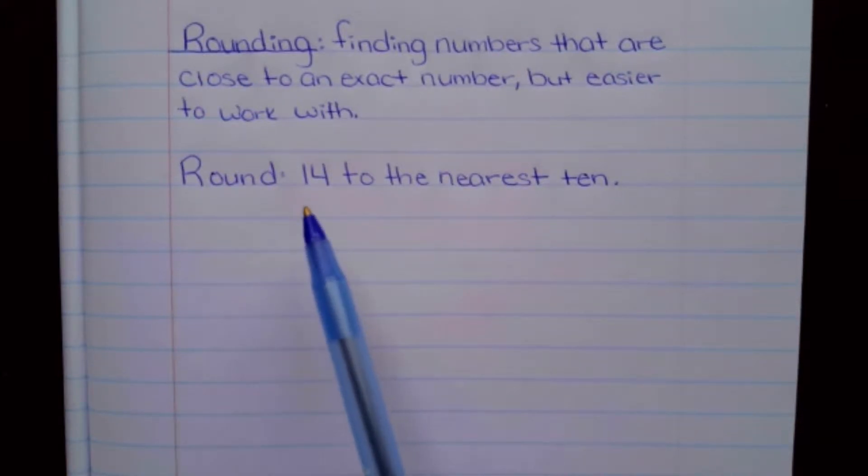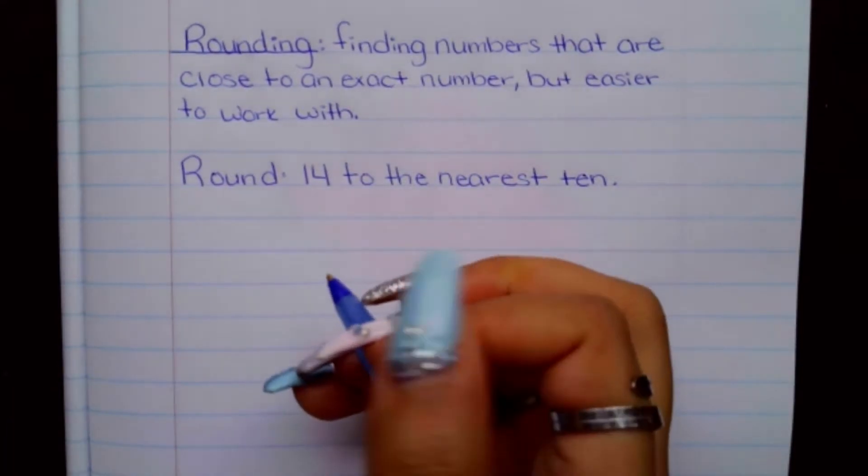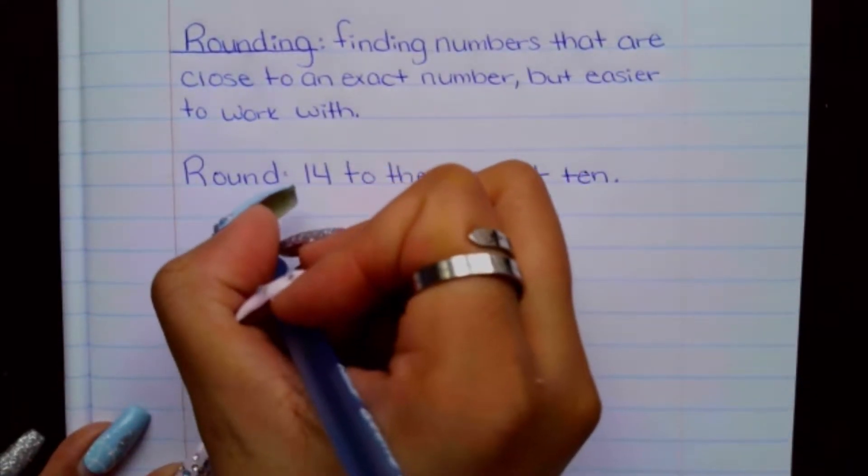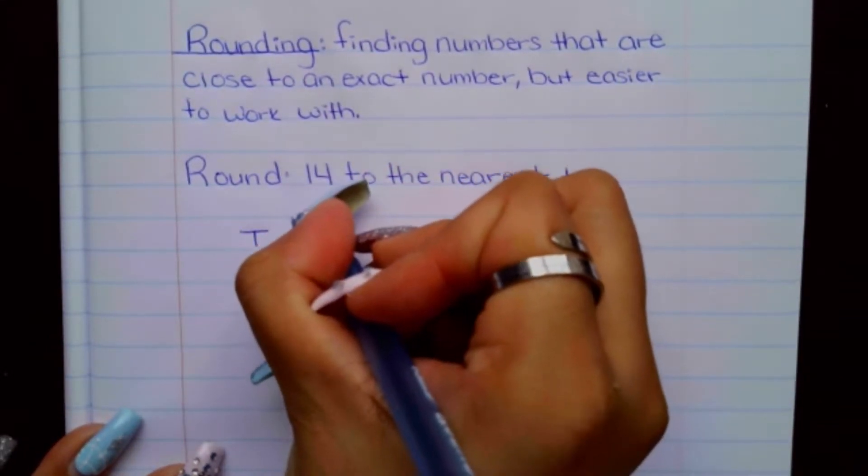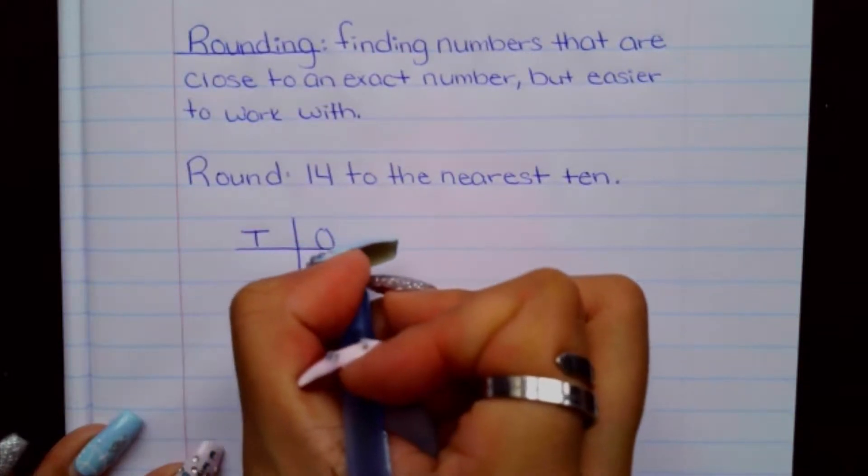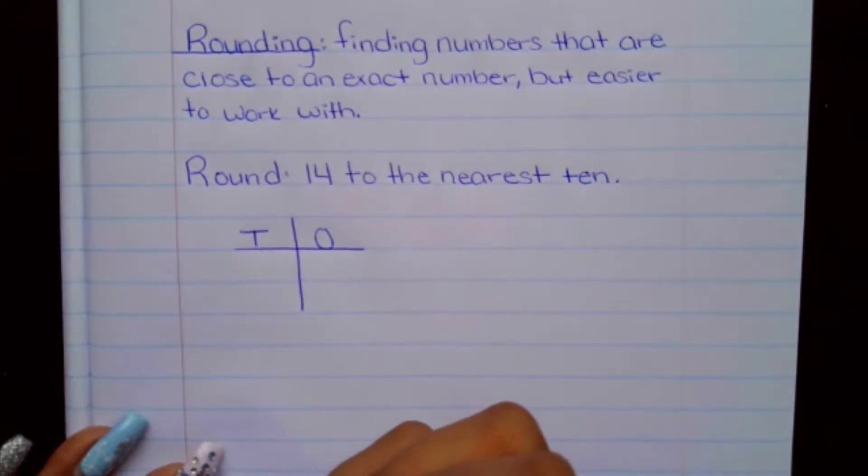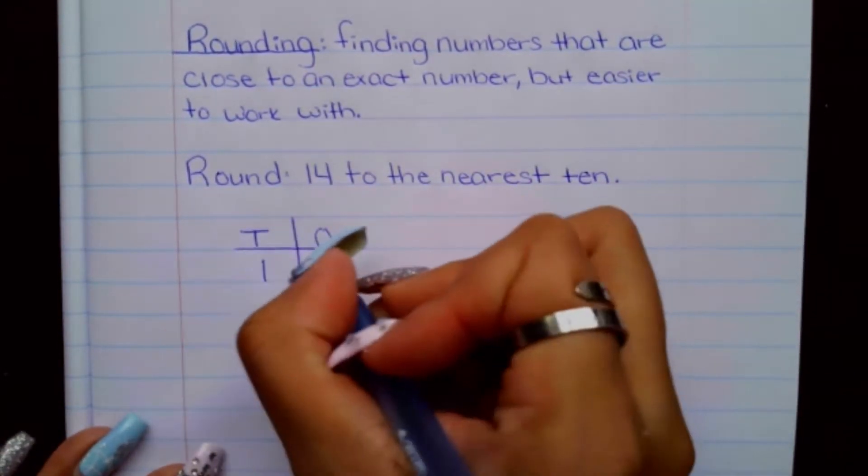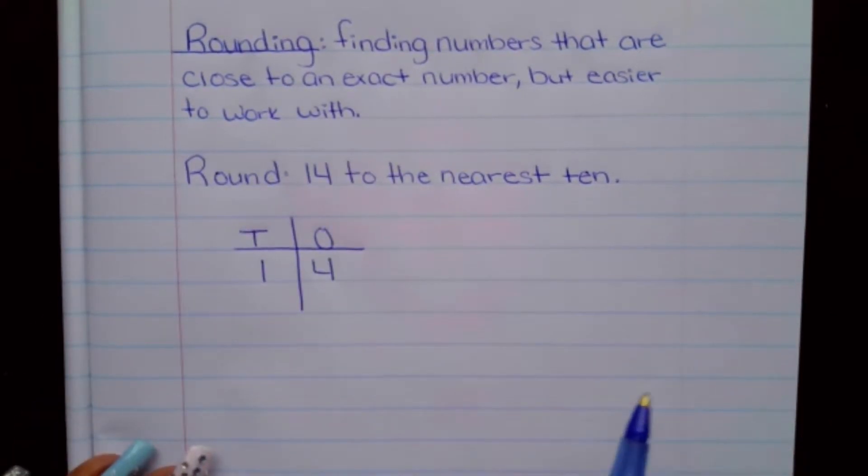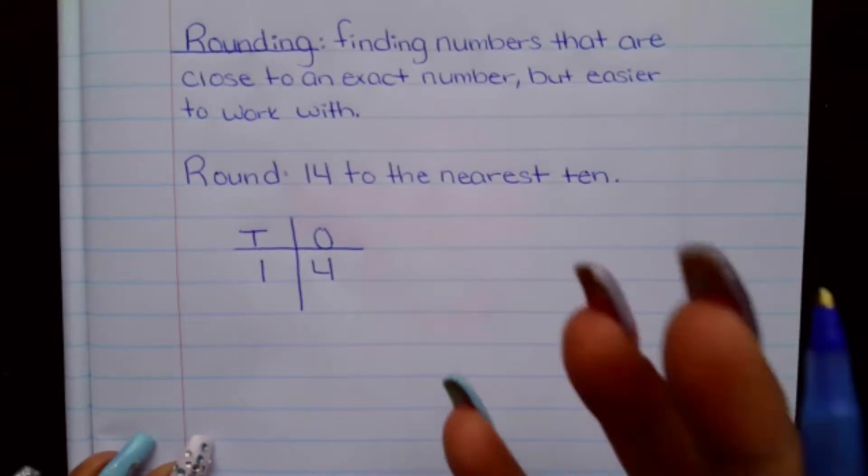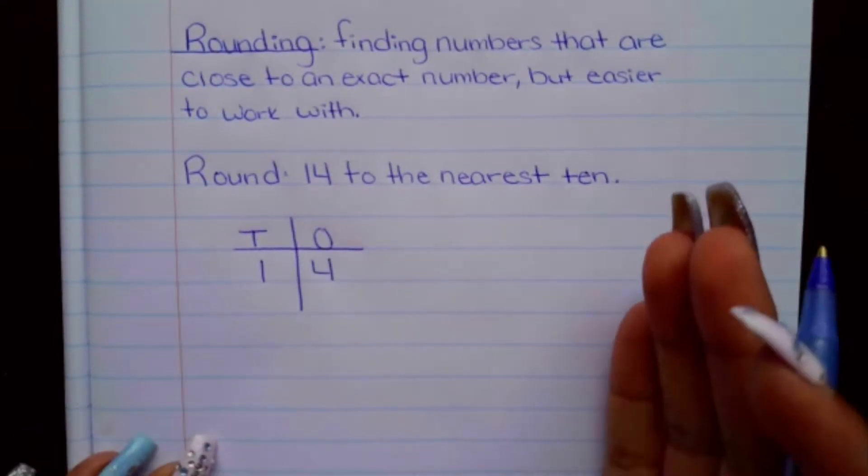So our first problem here, we're going to start off with rounding 14 to the nearest 10. We are first going to draw a t-chart, and then place our number inside, and this helps to keep our work organized. As scholars progress, they can round without the chart.